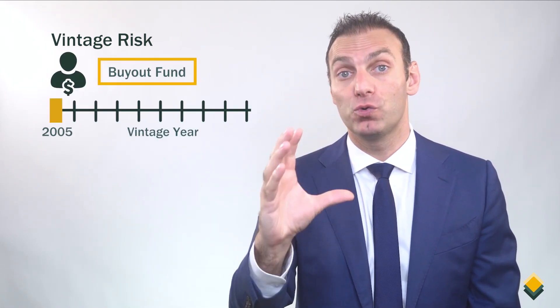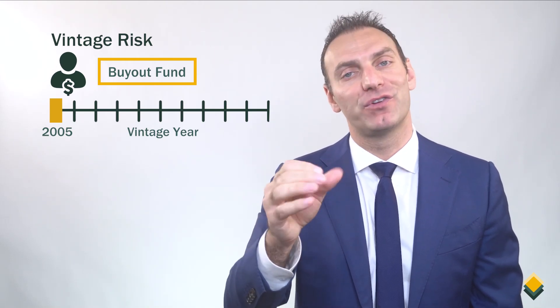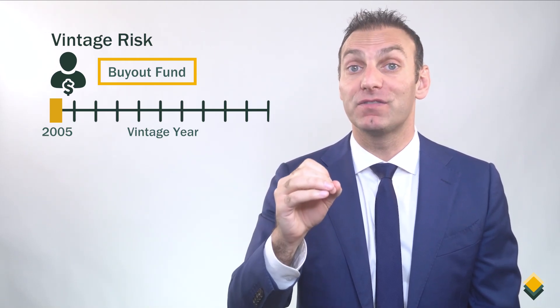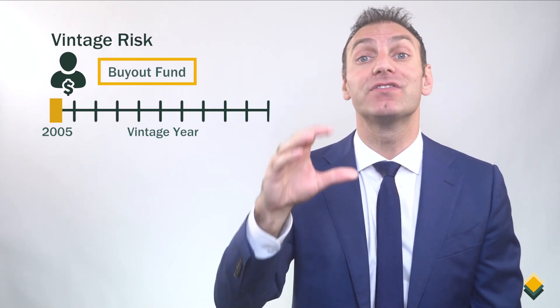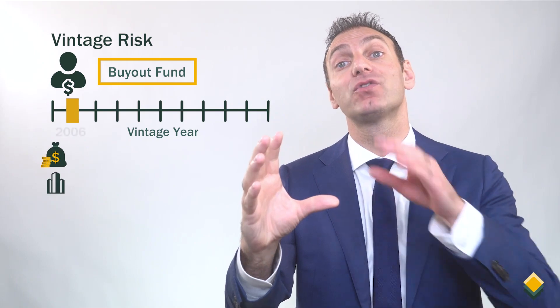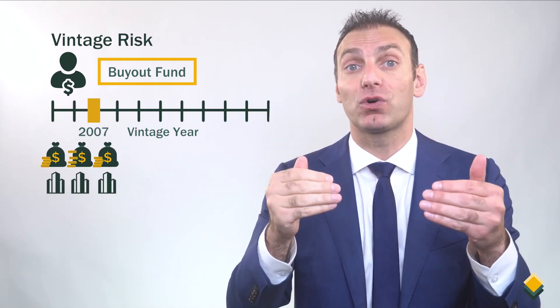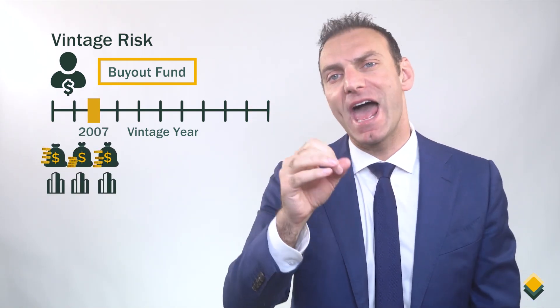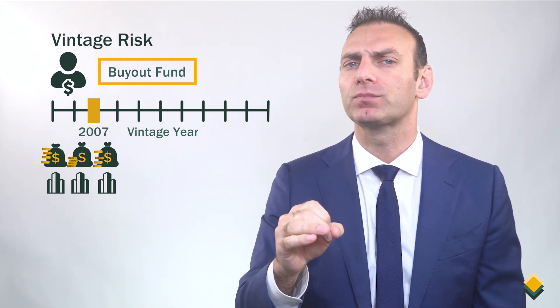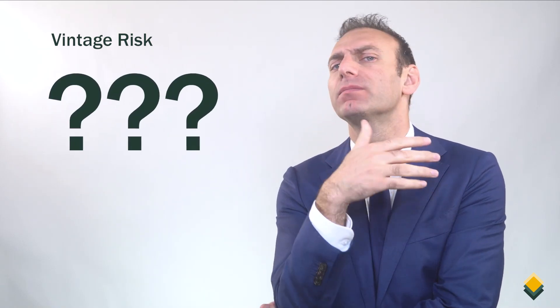Or let's say an investor invested most of their money in a buyout fund that had a vintage year of 2005. Well, there's a good chance that this buyout fund invested in companies in 2005, 2006 and 2007, before the 2008 financial crisis, and probably didn't do so well either. So how do you mitigate vintage risk?